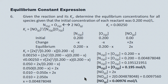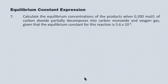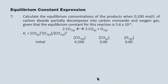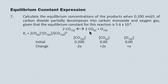That's the perfect square method. The second method is the small Kc method. Calculate the equilibrium concentration of the products when 0.200 mol/L of CO2 partially decomposes into CO and O2, given Kc = 5.6 × 10⁻⁸. Setting up the ICE table: CO2 starts at 0.200 mol/L; the others start at zero. CO2 disappears at 2x, CO appears at 2x, and O2 appears at x.